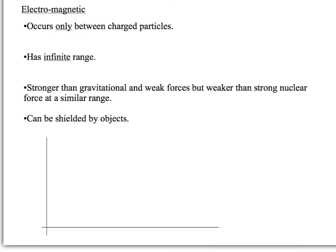Electromagnetic only occurs between charged particles - protons, electrons, muons, taus, that sort of thing. Both of the particles need to be charged, so a proton can't interact with a neutron through electromagnetic because only one of them is charged. It has infinite range, just like gravitational. Electromagnetic is stronger than the gravitational and weak forces, but weaker than the strong nuclear force, comparing them all at the same range. Unlike gravitational, you can actually be shielded from electromagnetic by objects.